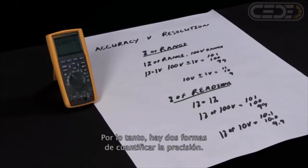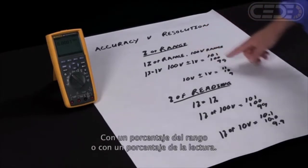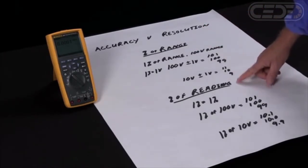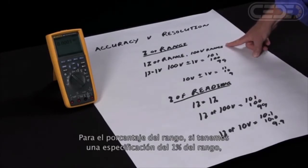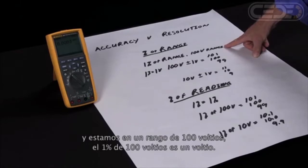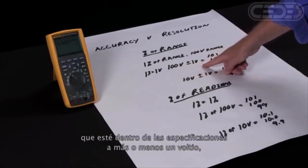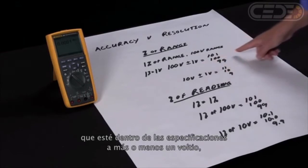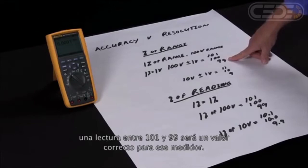There are two ways accuracy is specified: one is percent of range and one is percent of reading. For percent of range, if we have a one percent specification of range and we're on a hundred volt range, one percent of a hundred volts is one volt. So that means with a reading of a hundred volts, that can be within specification at plus or minus one volt — so a reading between ninety-nine and a hundred and one is actually a good reading on this meter.